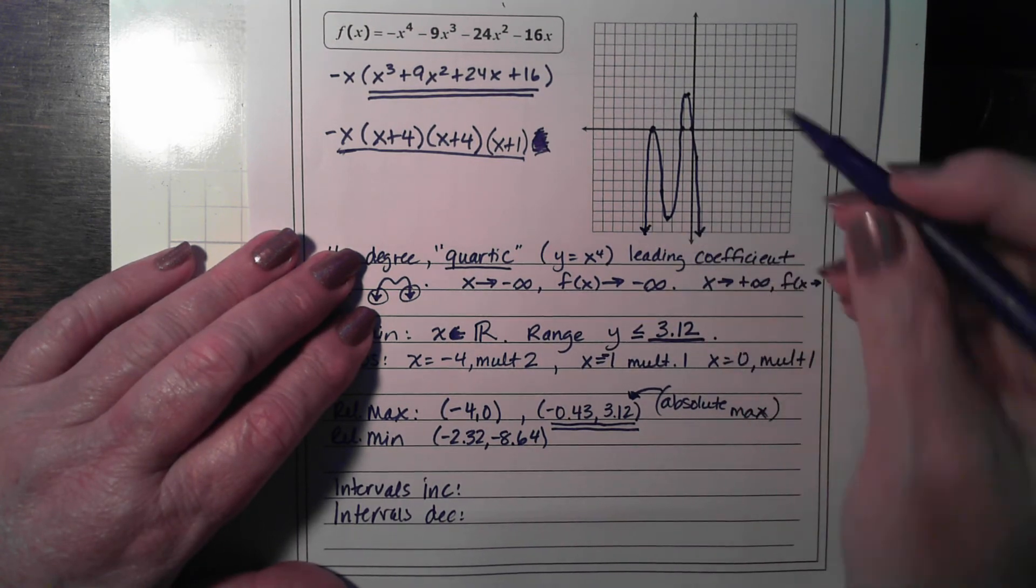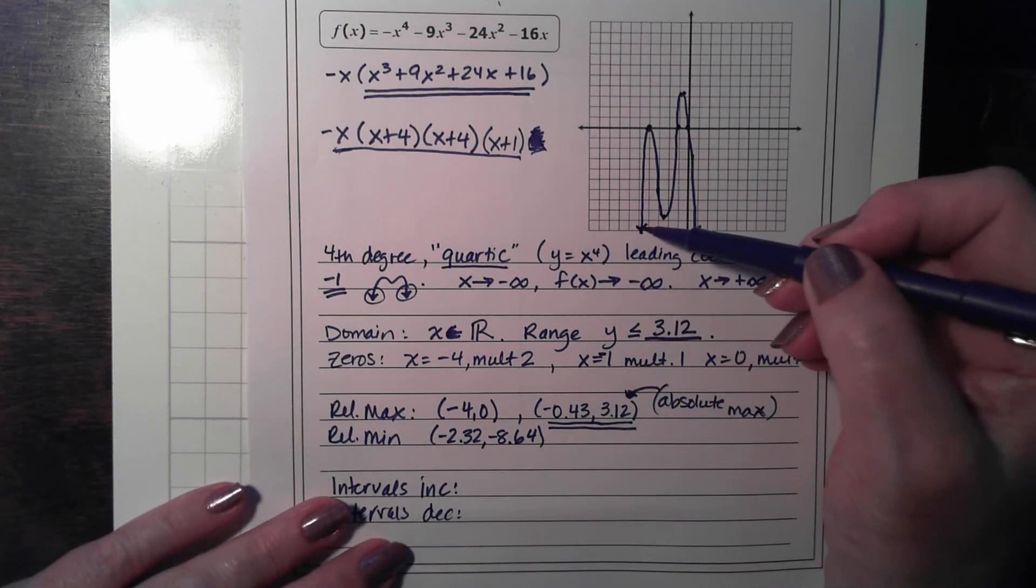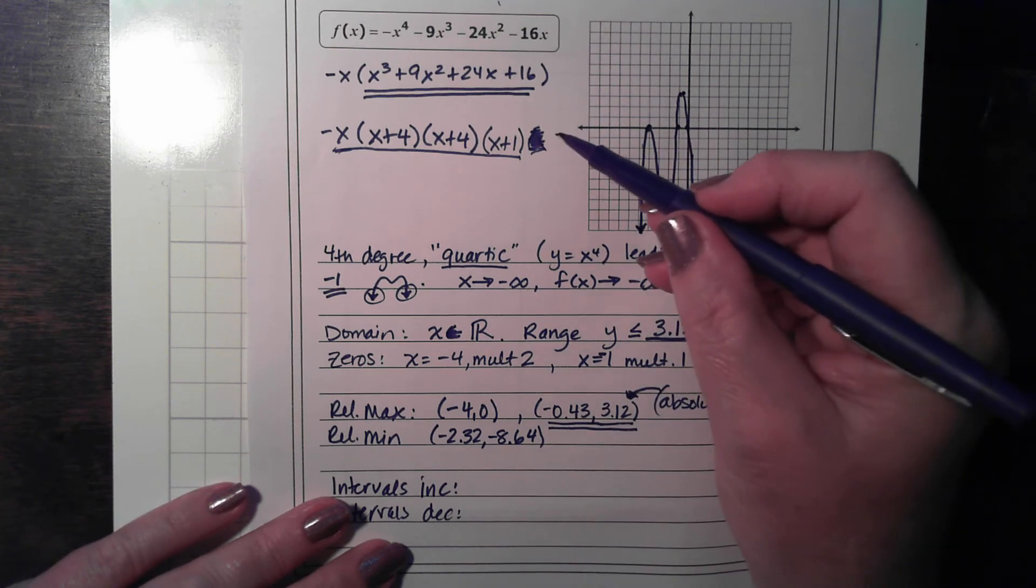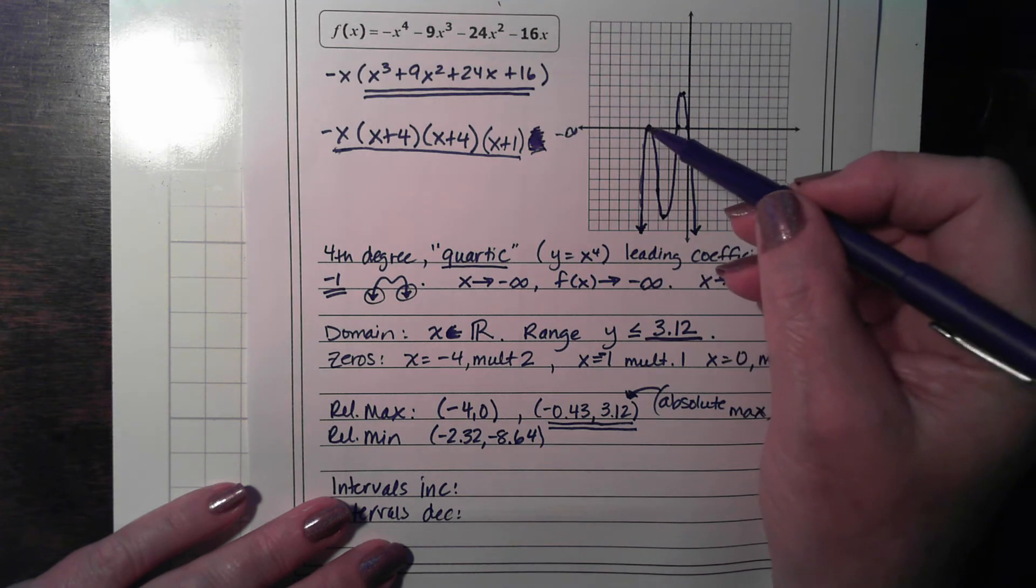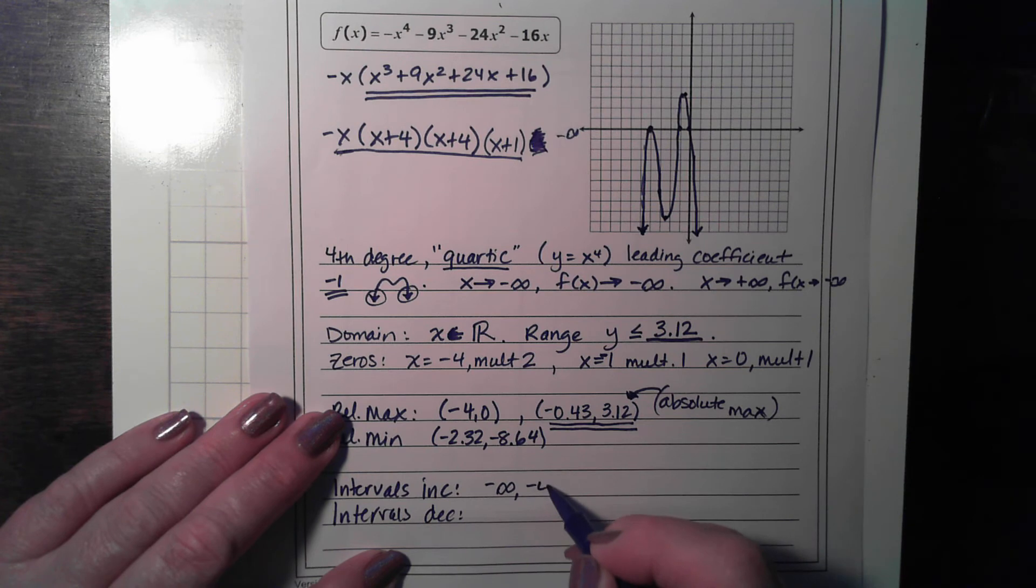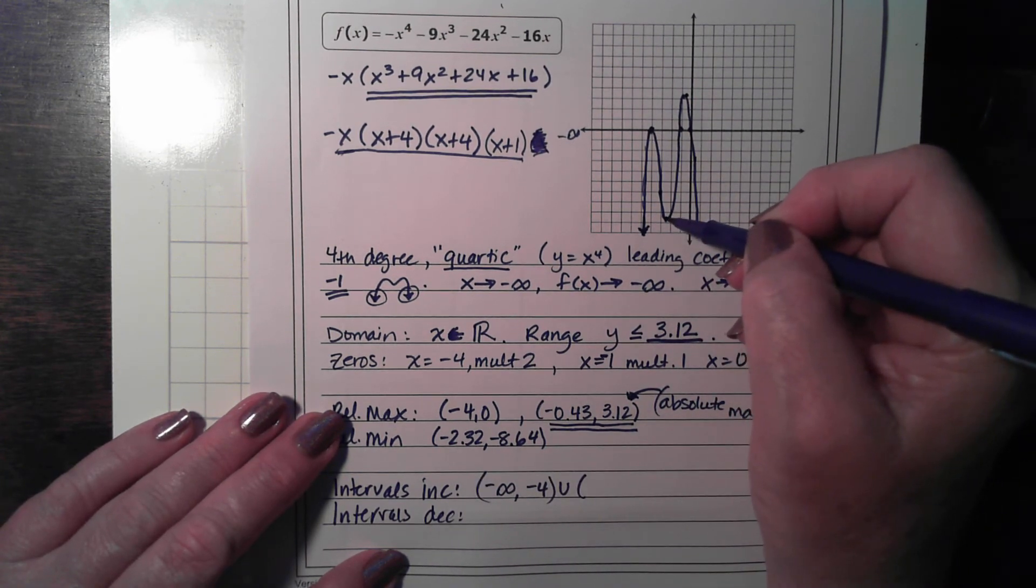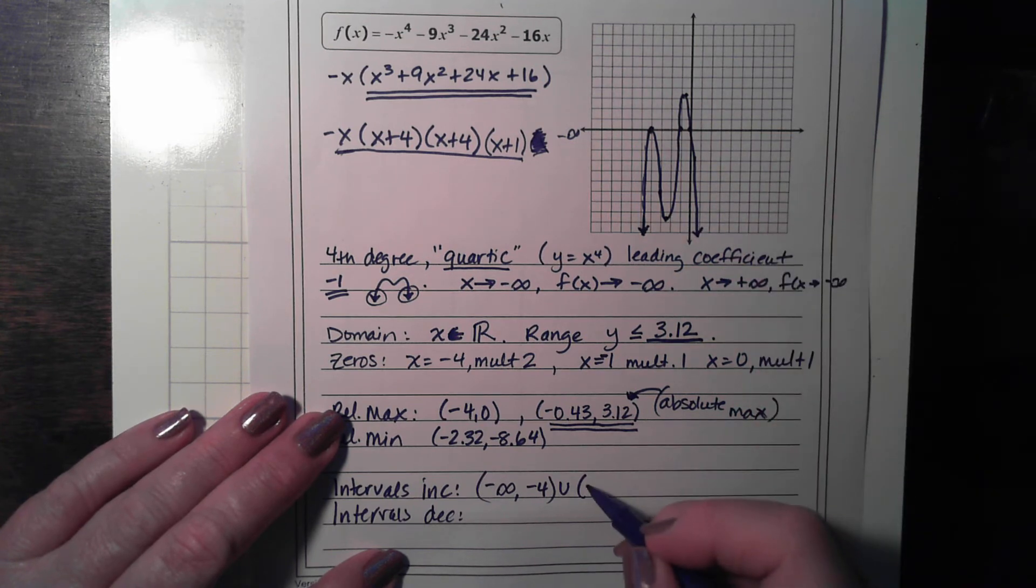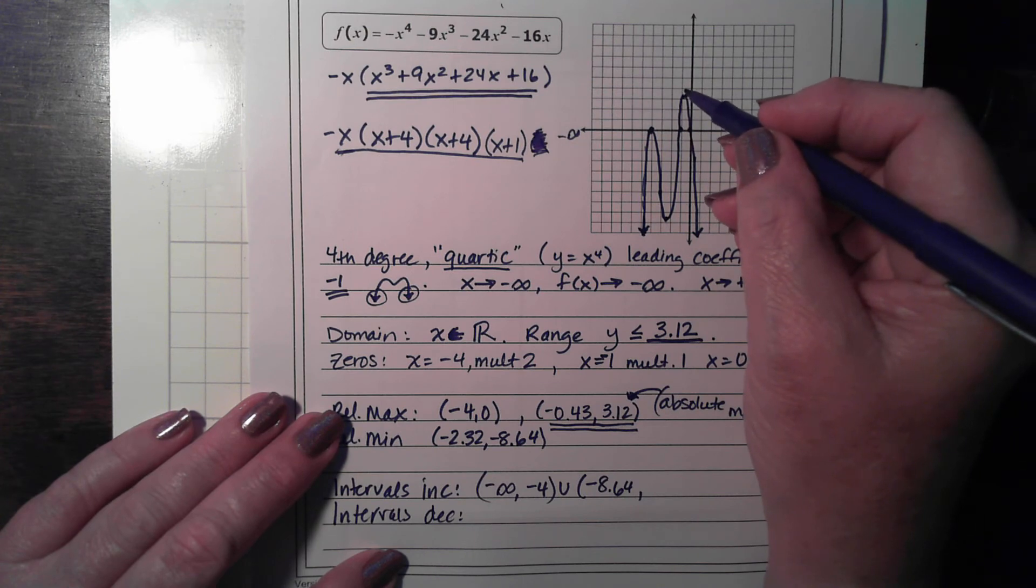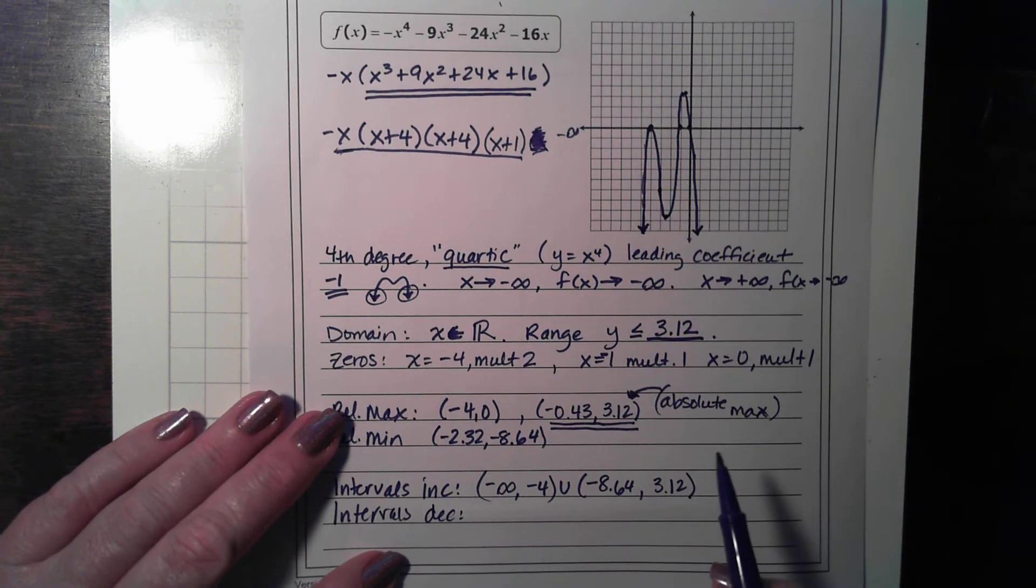So our intervals of increase. Well, it increases here and here. From negative infinity, because we're talking about the x values, negative infinity all the way to this x value, it's increasing. So negative infinity all the way to negative 4, it's increasing. Union symbol, it's increasing from this minimum, negative 2.32, all the way up to this maximum, which is negative 0.43. Those are our two intervals of increase.